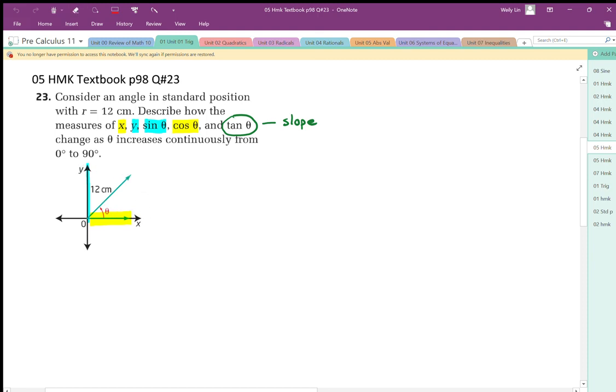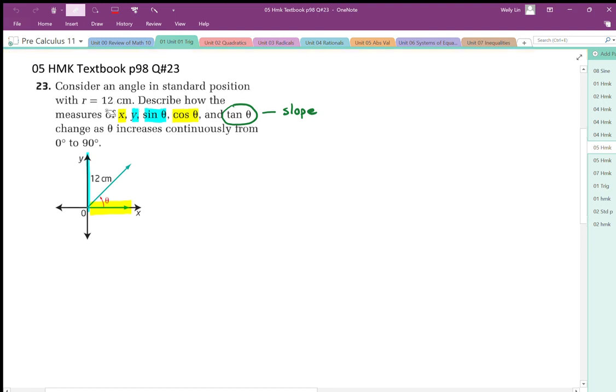So the first thing is it's important to understand that the x position goes with the cosine ratio. Those two go together, and so when we talk about cosine, we should think about x, the x position, the horizontal position.